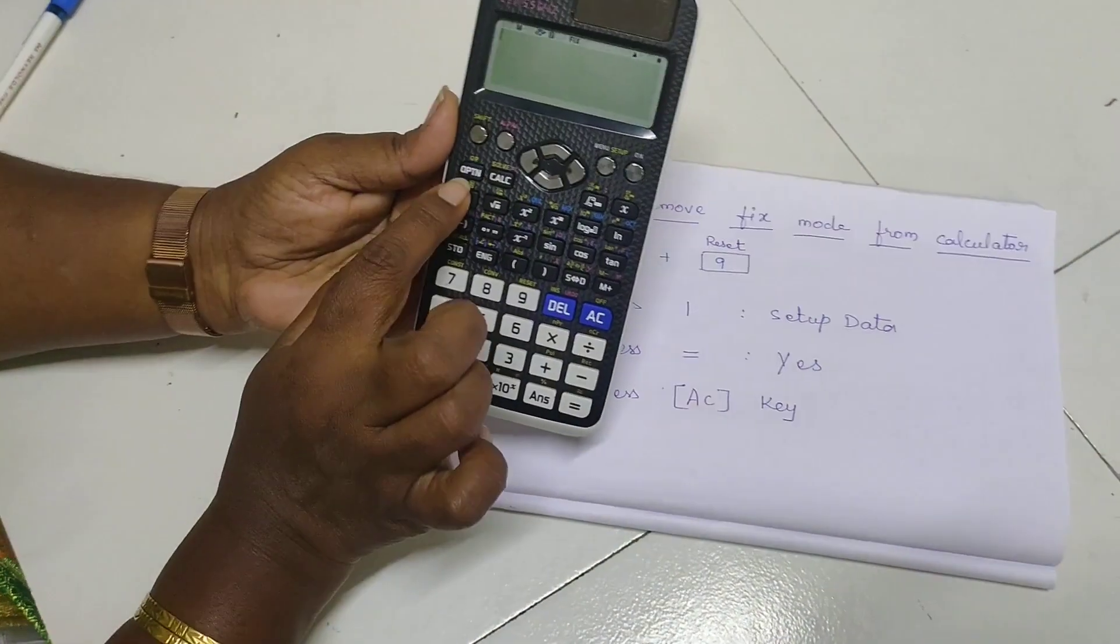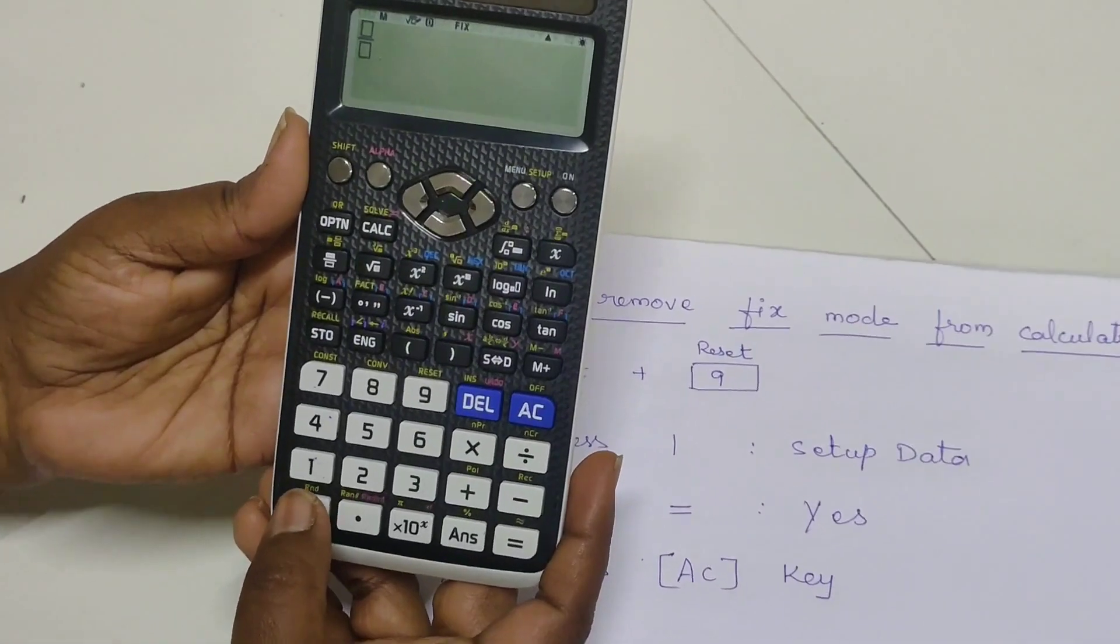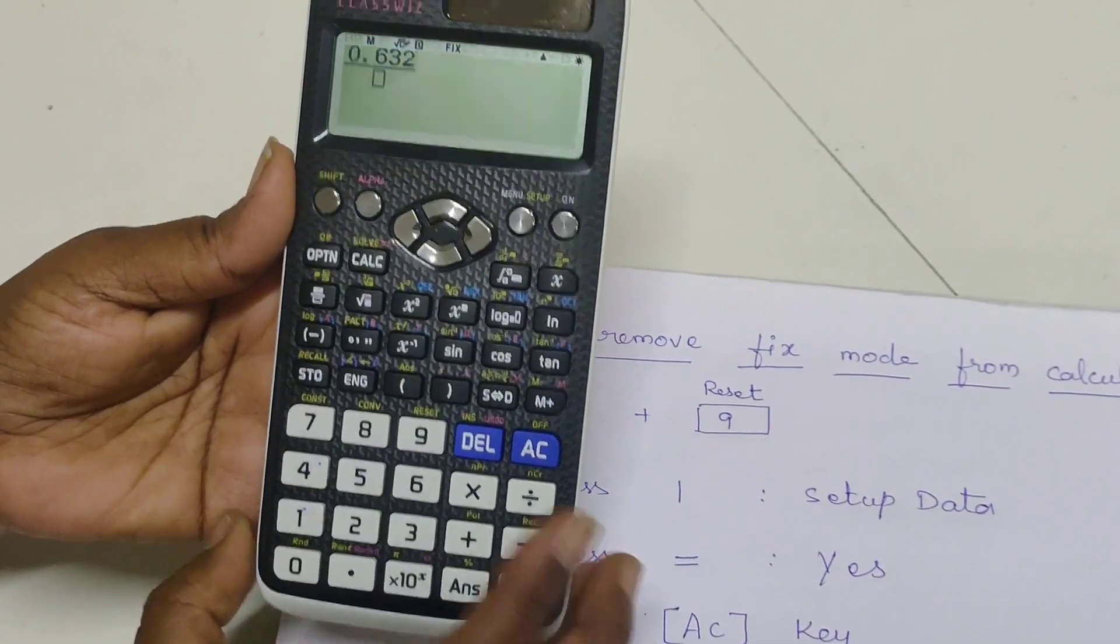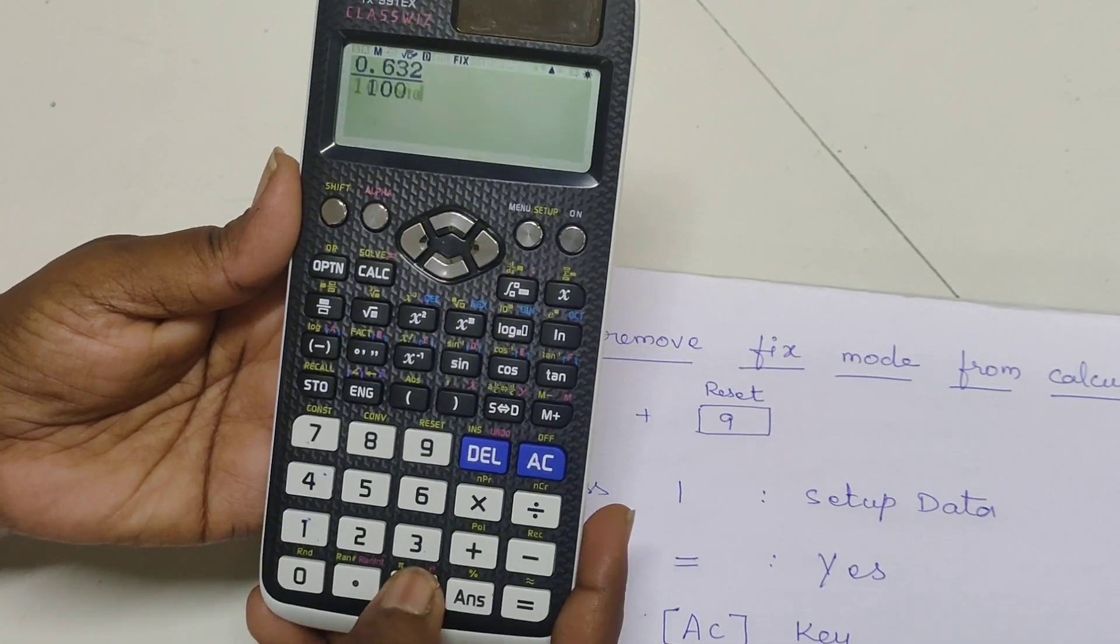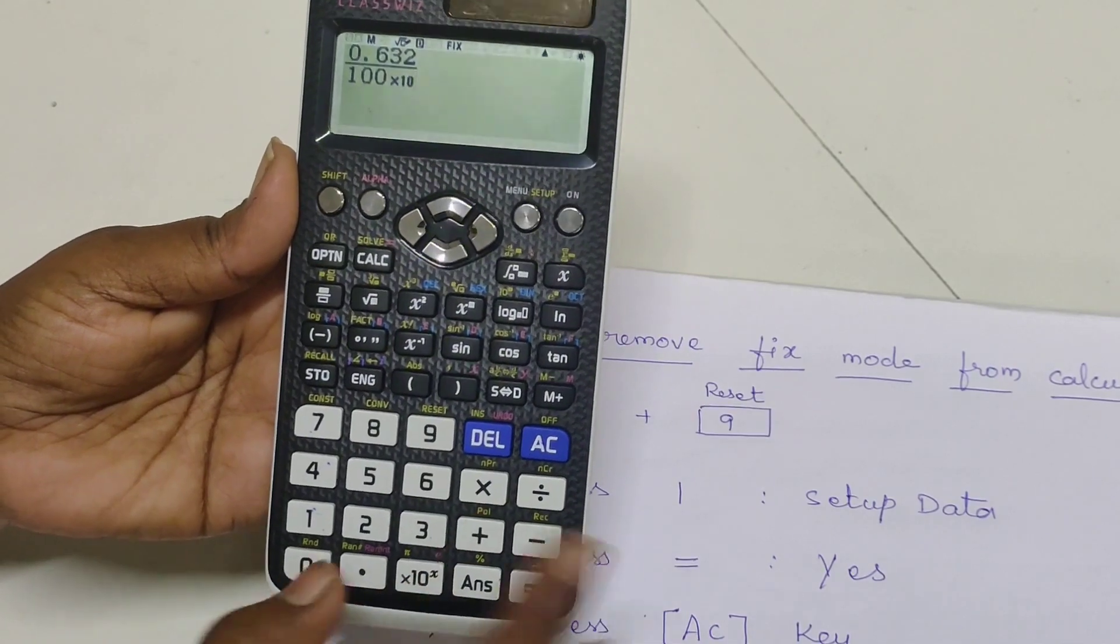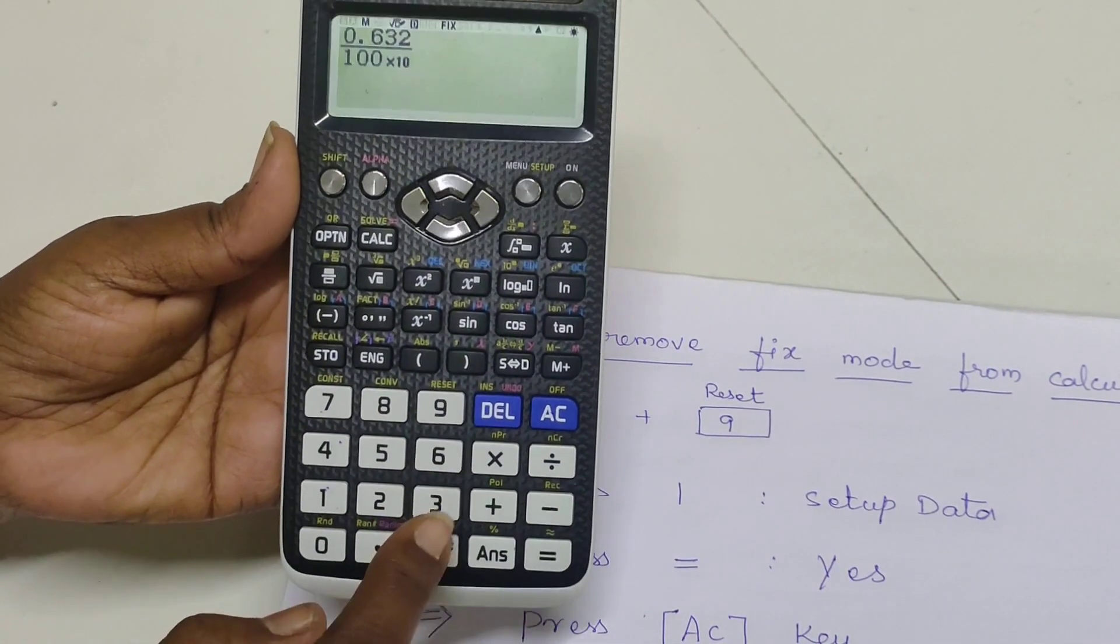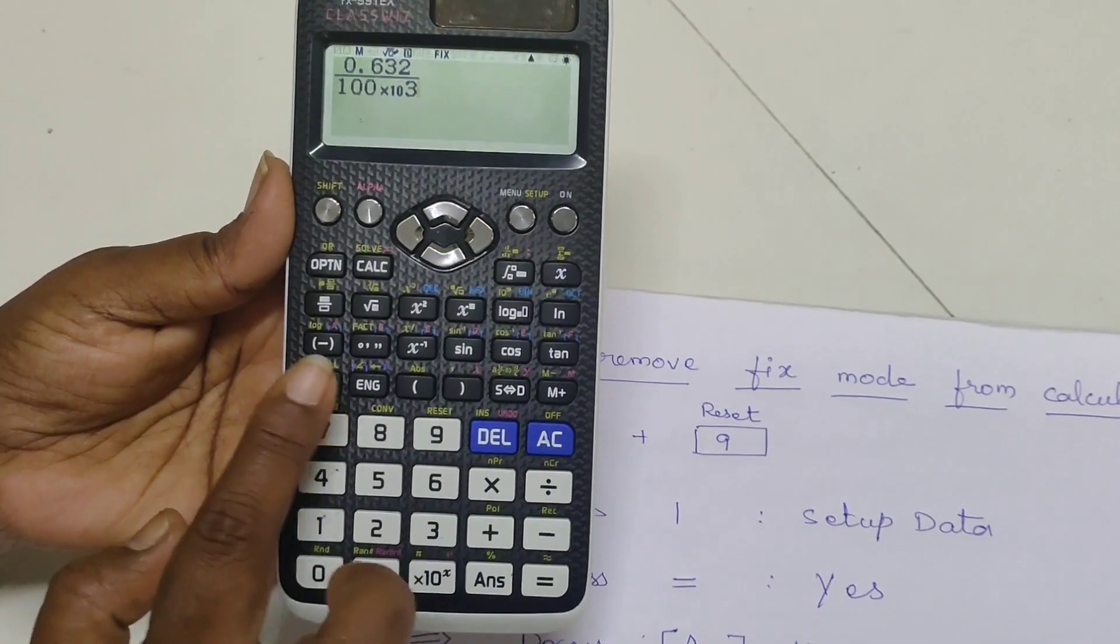The example is now you see numerator and denominator in the numerator we have the value 0.632 and then denominator 100 into 10 power plus 3. If it is minus we have to press this button if it is plus 3 directly press this one no need to mention the plus symbol.